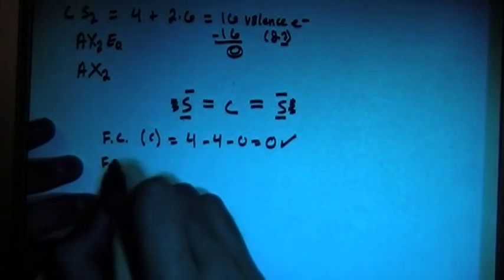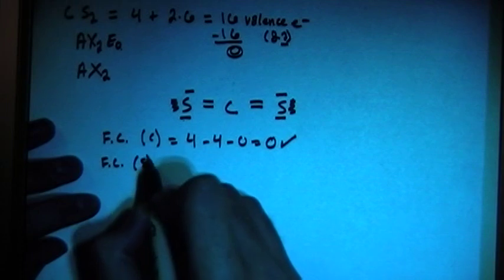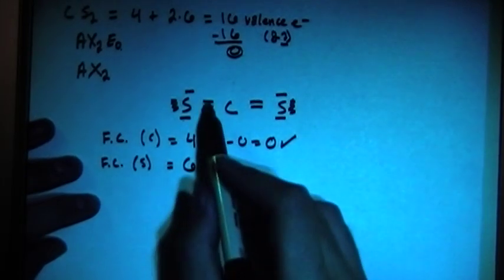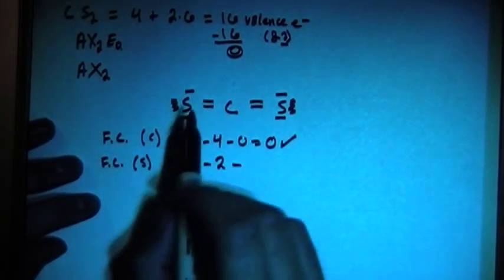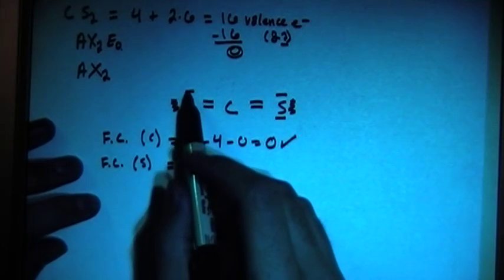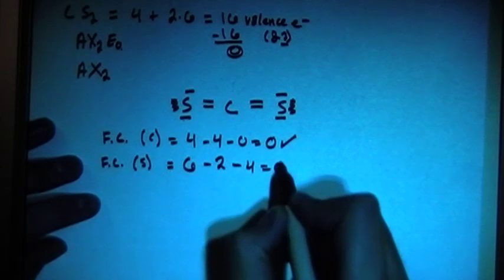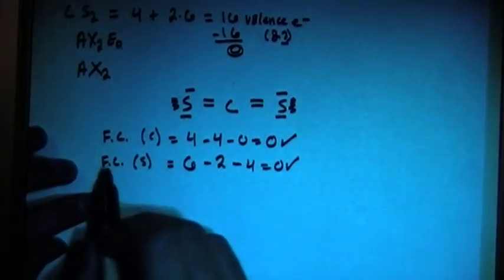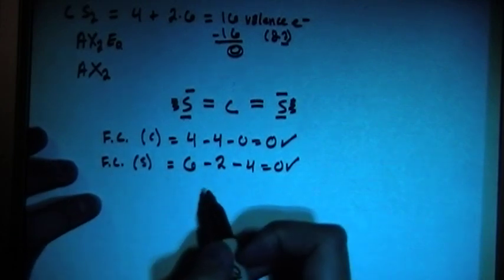Now the formal charge on each of the sulfurs, remember it's going to be 6 for the valence electrons, minus the number of bonds, which is 2, and then minus the number of lone electrons, which is 4, and that also gives us 0. And that's going to be the same for each of the two sulfurs, so since both formal charges are 0, that's what we're looking for. Okay.